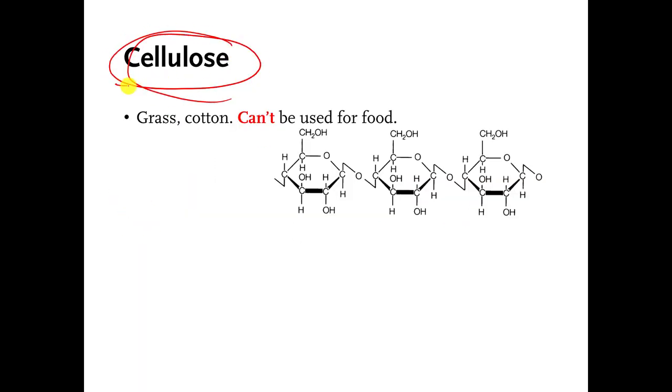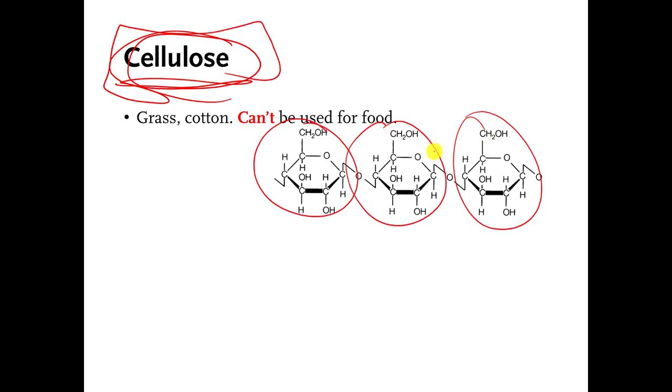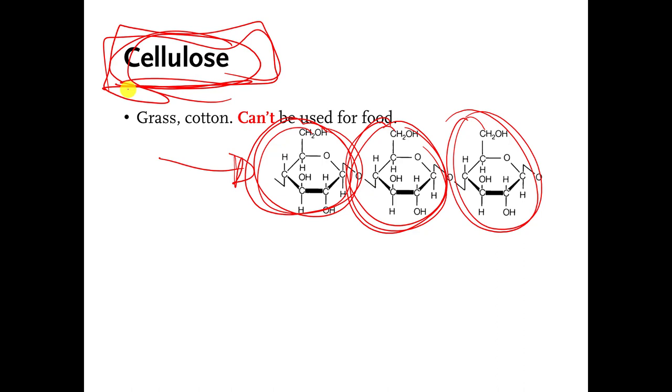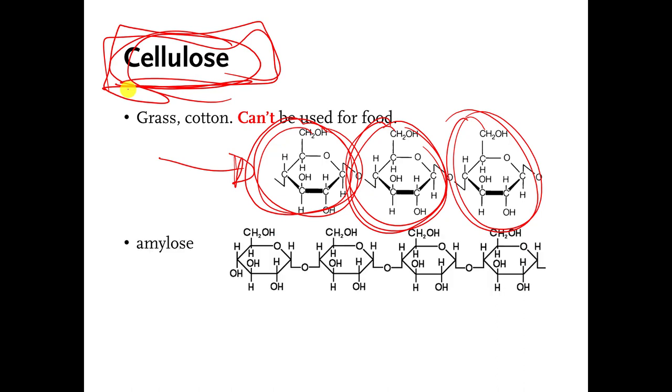Cellulose. This is the stuff that's in plants, in grass and things like that. Glucose is all connected to each other as well, but they're connected in a different way. Because they are connected in a different way, we can eat this stuff, but we can't use it for food. We can't get energy from it because we can't break the attachments. But again, I don't care that you know cellulose. This is just another example, also made by dehydration synthesis.